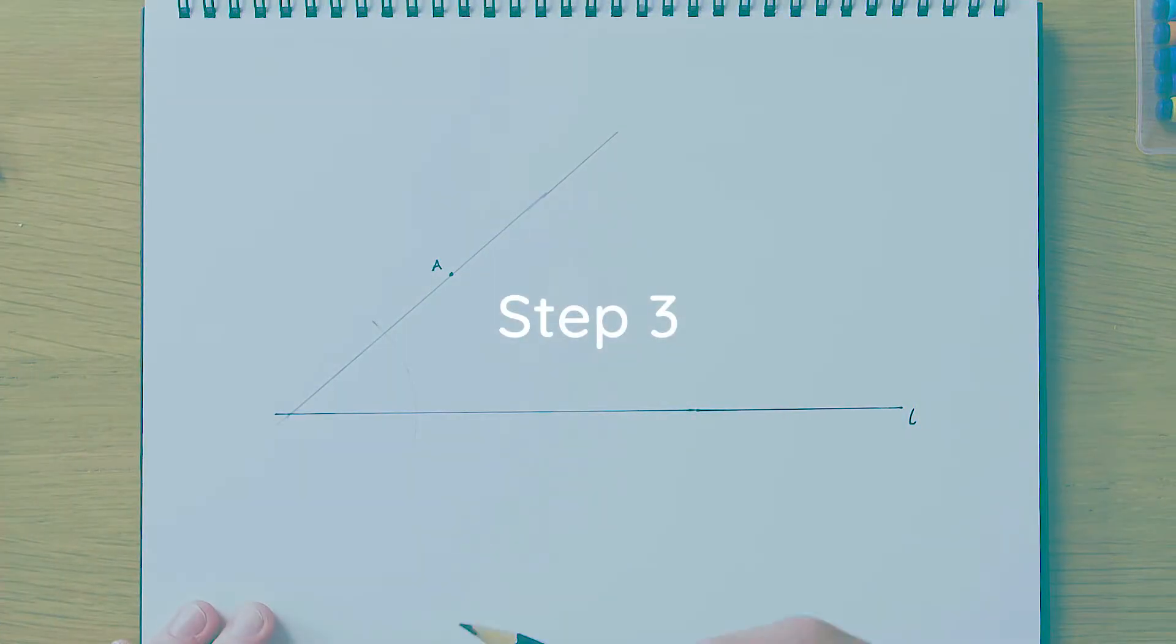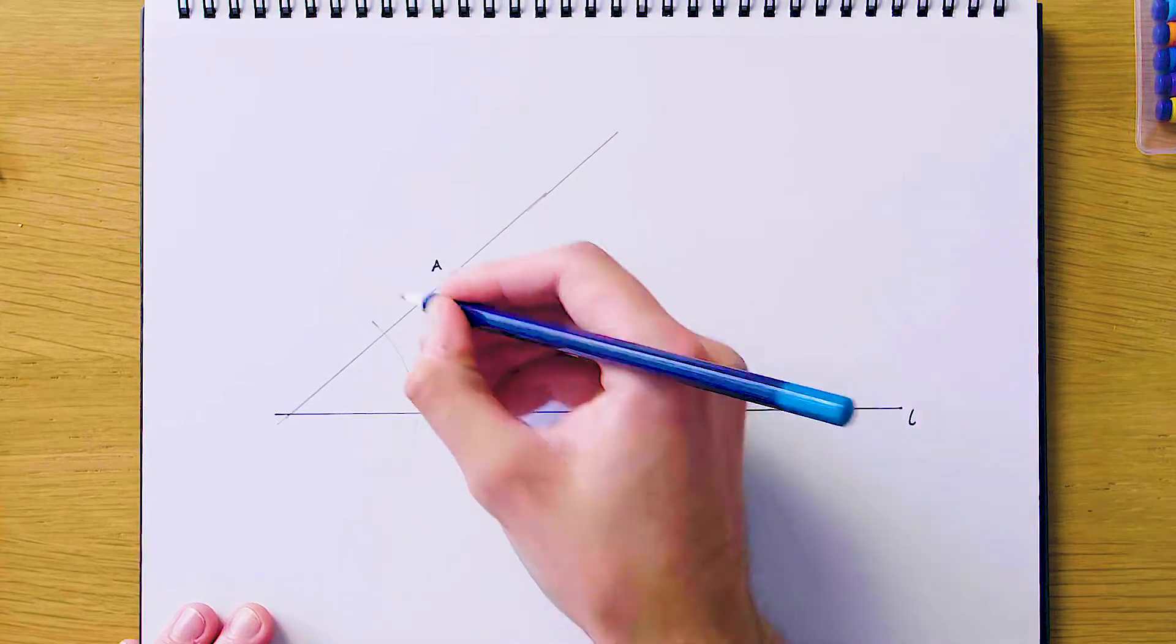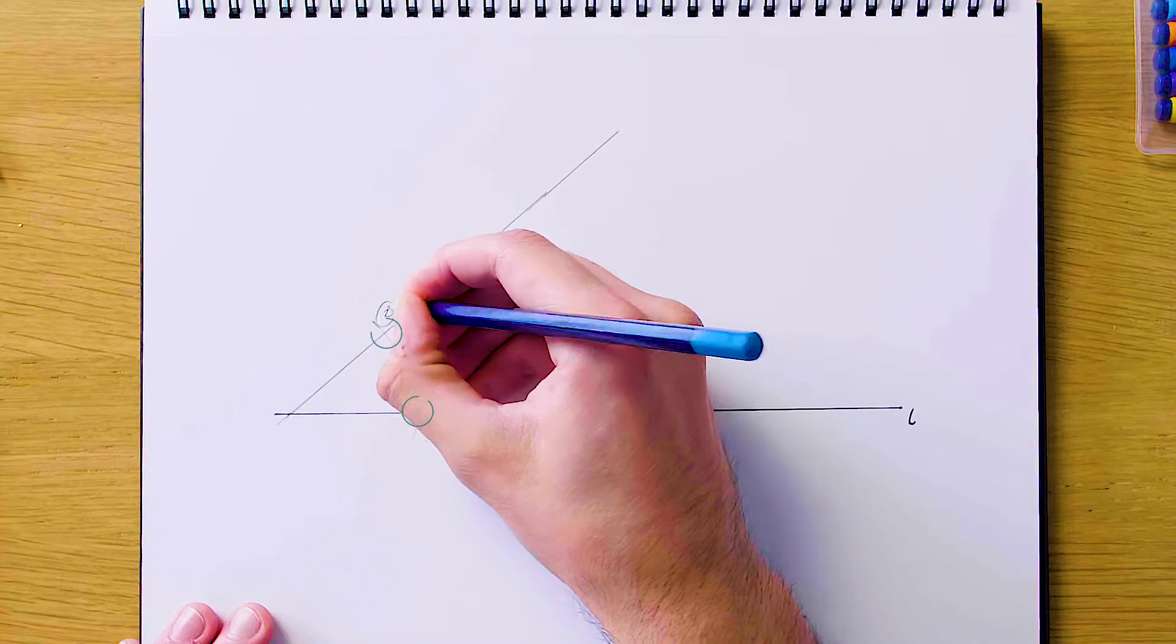And now for our third step, we're going to have a few vertices to be dealing with here. So I'm just going to label these vertices 1 and 2 down here. So this is vertex A1 and this is vertex A2.